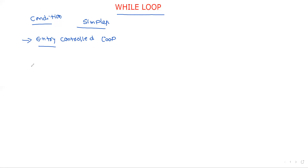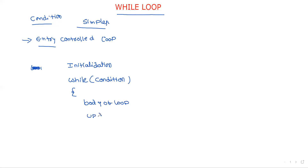I will show you the syntax first. Some initialization is performed. After initialization of the variable, inside while we write the condition, followed by the body of the loop, and then the update. We already discussed the four points: first is initialization before entering the loop, then we enter the while loop and test the condition. If the condition is true, execute the body of the statement, and after executing the body, perform the update operation.